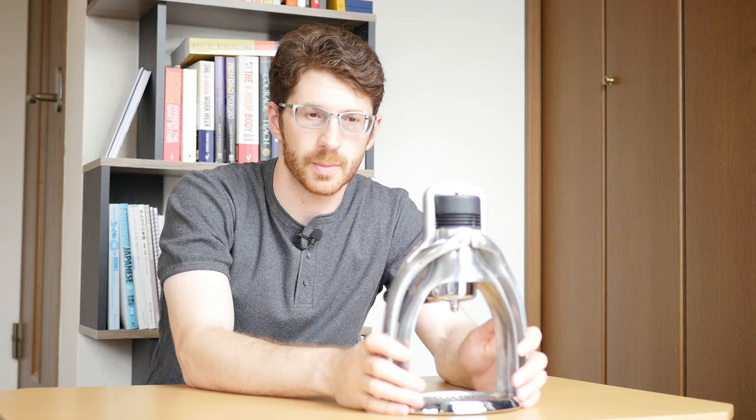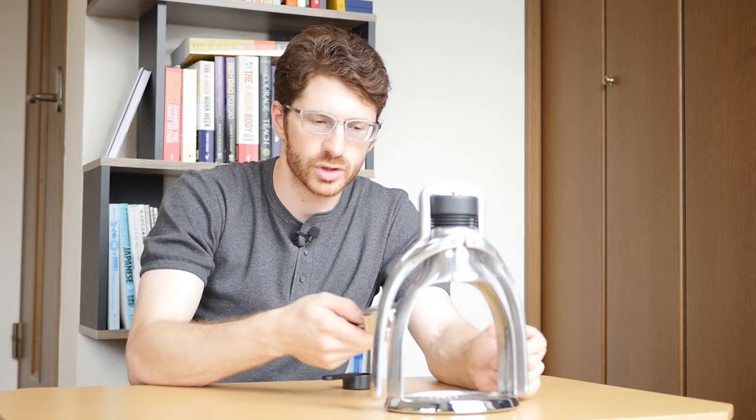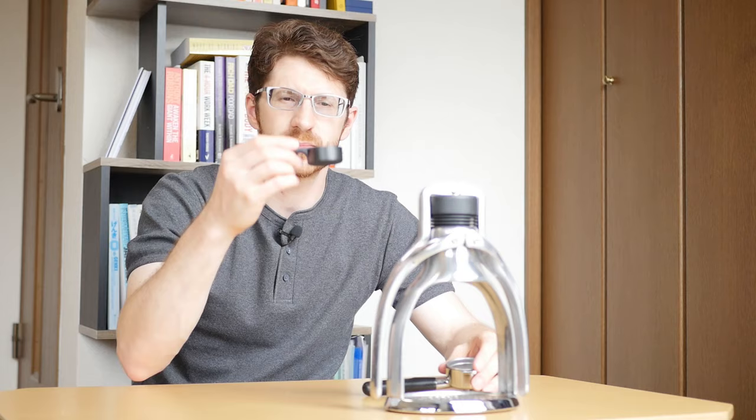So the ROCK machine comes with a few things. It comes with this small portafilter—unfortunately it's not bottomless. I would have liked to have a bottomless portafilter, especially for something like this where it's going to look really interesting coming out of the bottom. But it's got this little spout, and it also comes with a dosing spoon that doubles as a tamp.